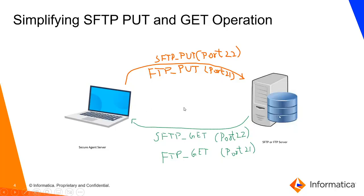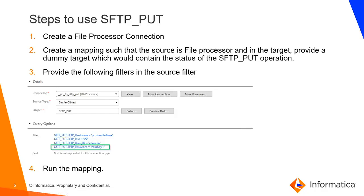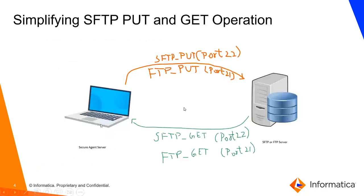Similarly, if I have a remote server and I'm trying to get files from that remote server to the local agent server, that would be an SFTP get operation. If the communication happens over port 22, that's an SFTP get; if it happens over port 21, that's an FTP get. In today's session we are going to mainly focus on the SFTP put operation — moving files from the local agent server to the FTP server.